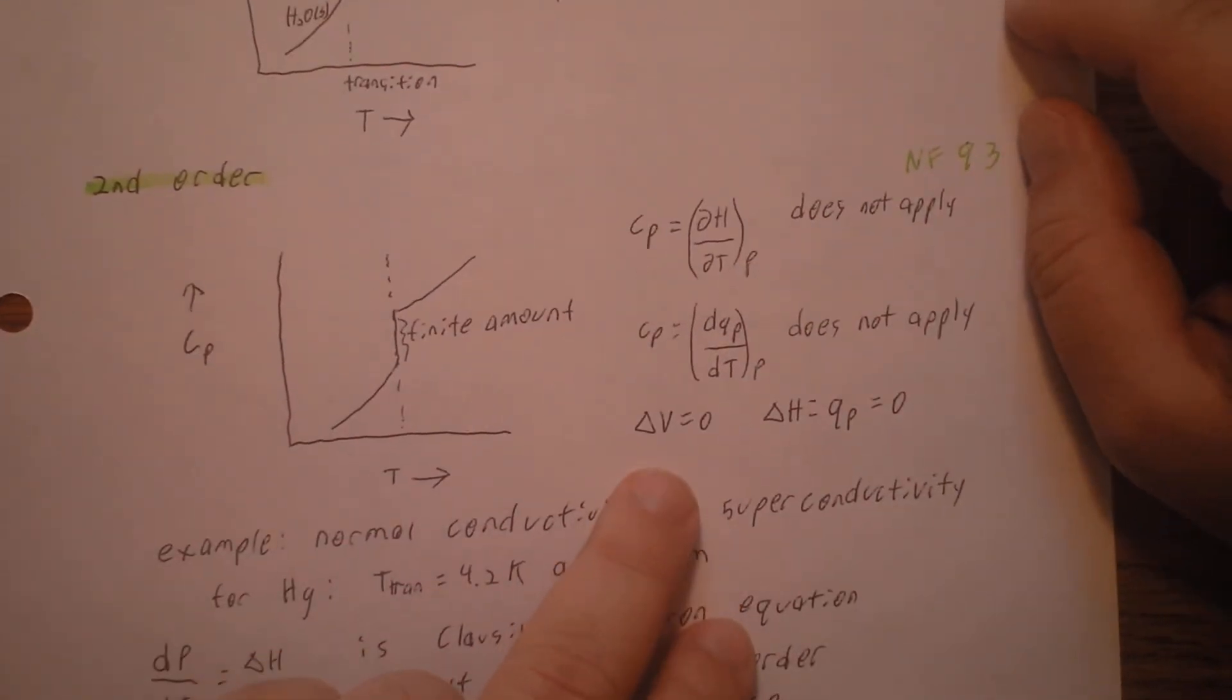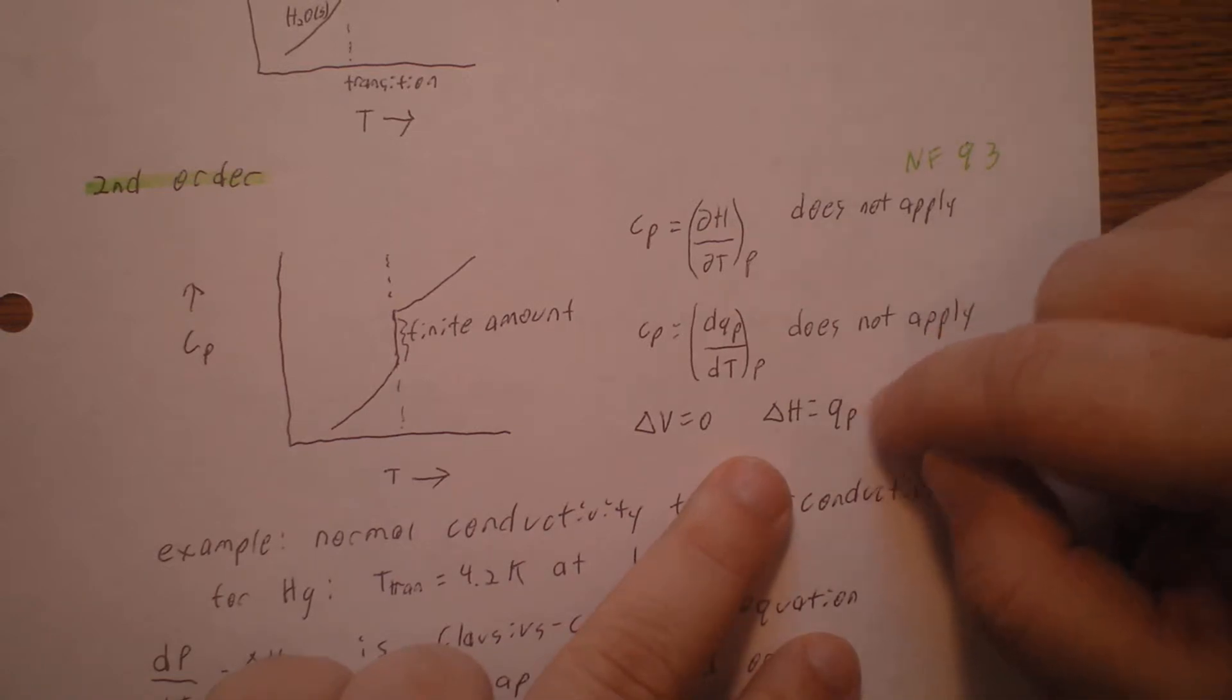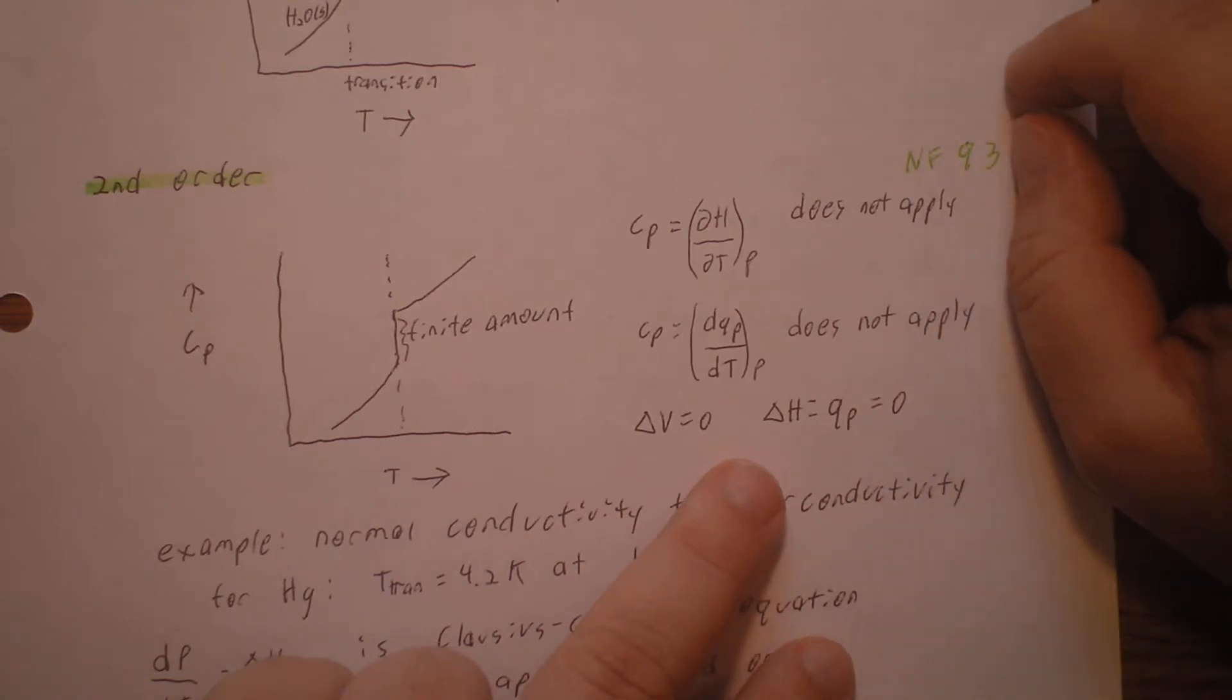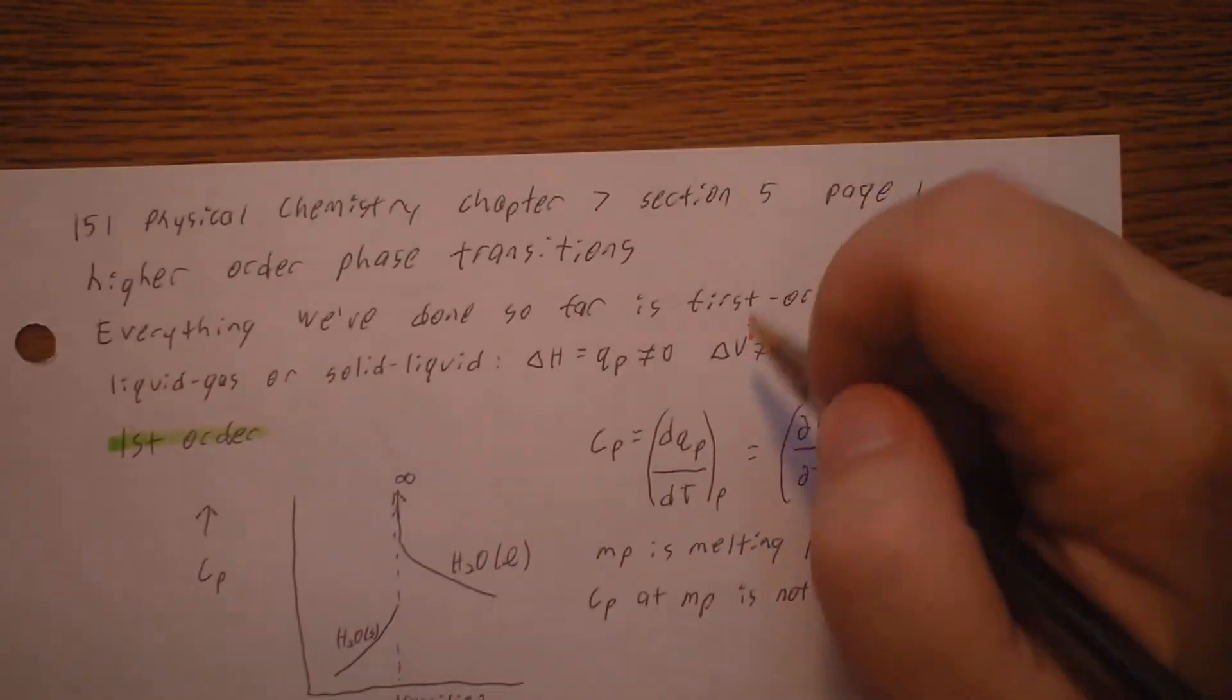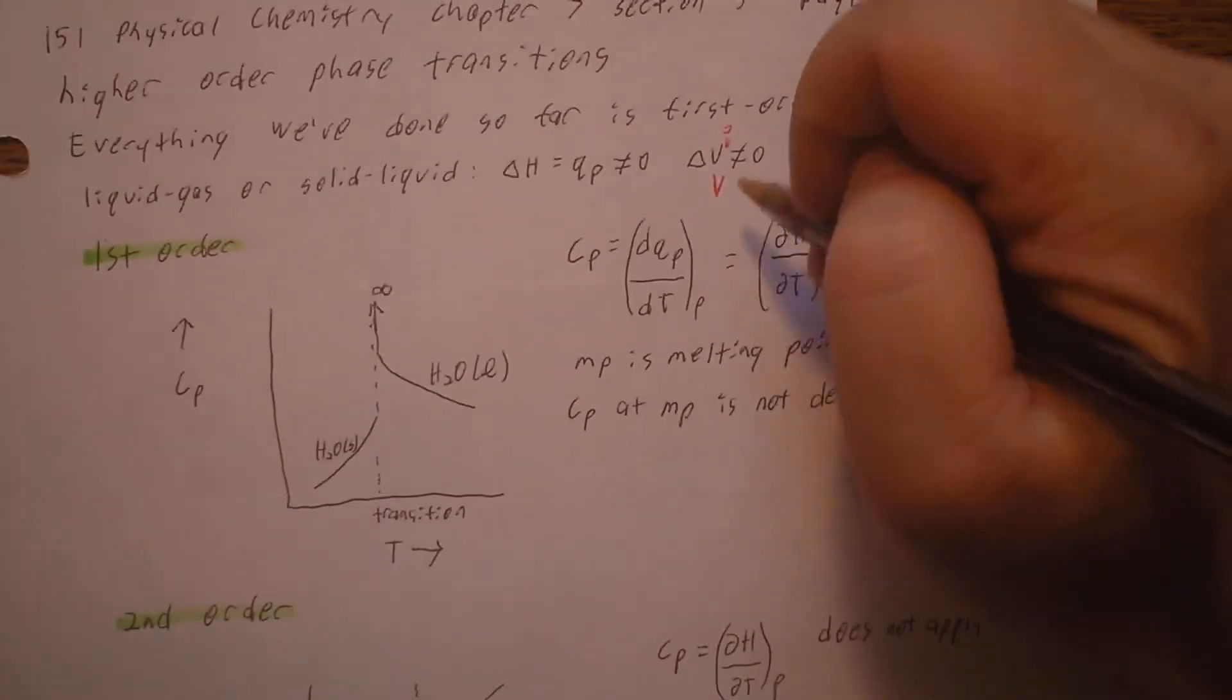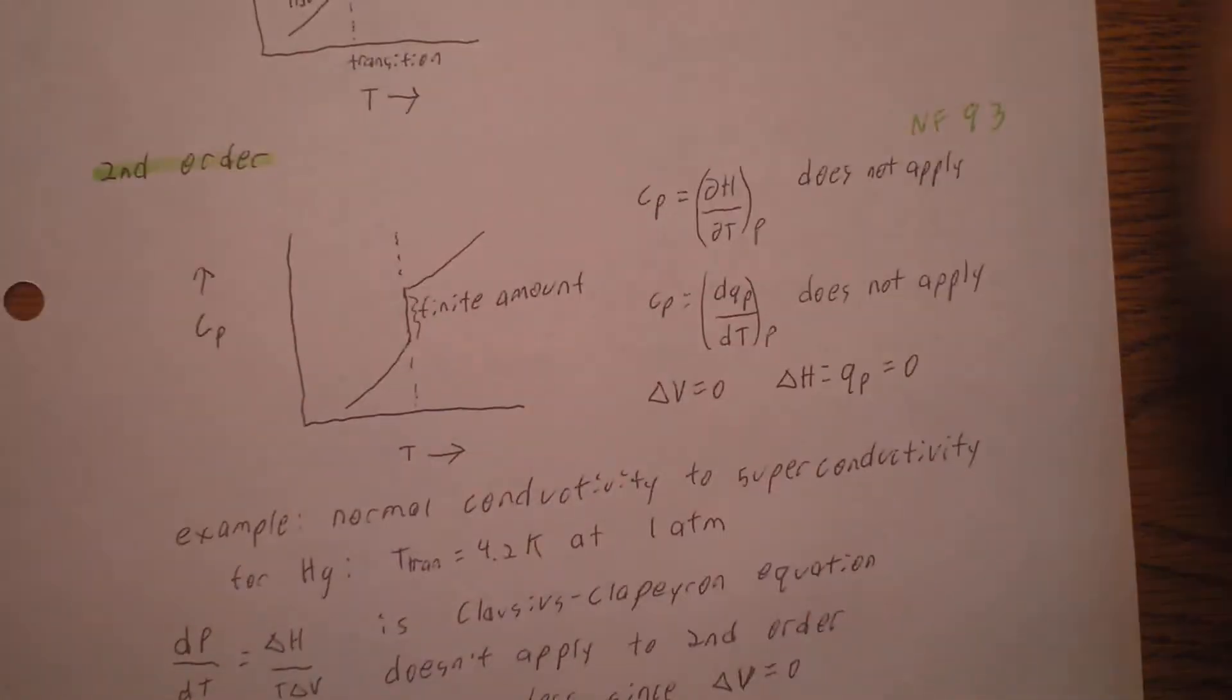Now, the change in volume is equal to zero, and the change in enthalpy is equal to QP, which is equal to zero. Yeah, I think this one back up here was volume. I'll have to check and make sure.